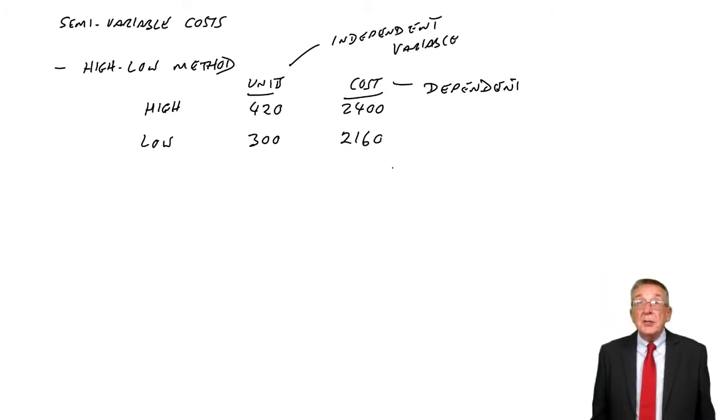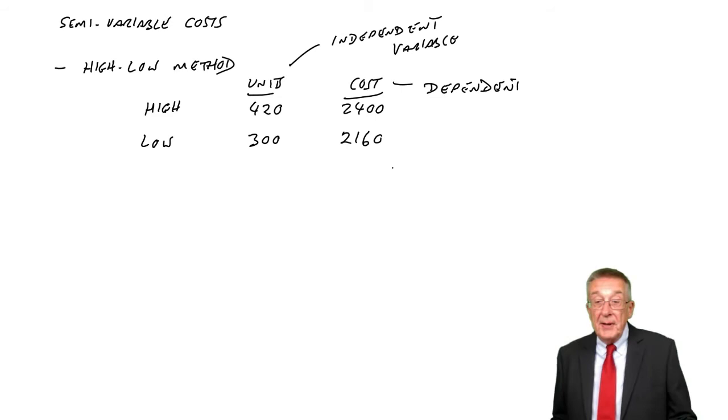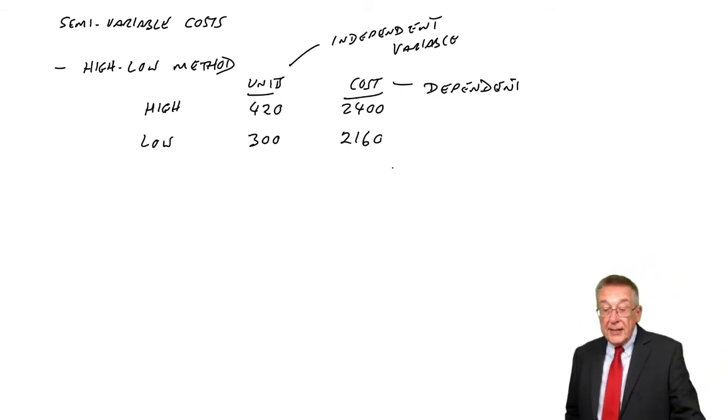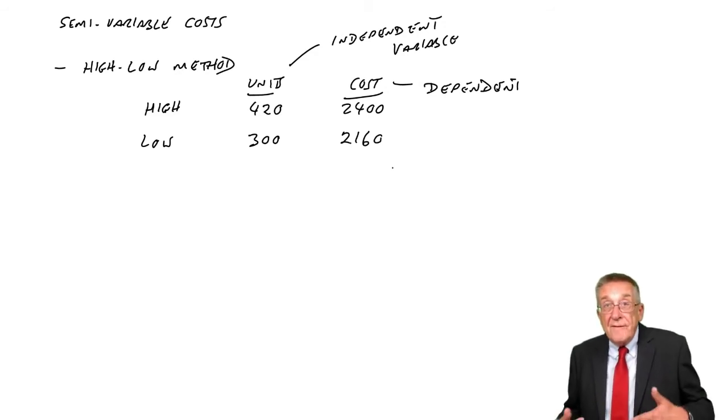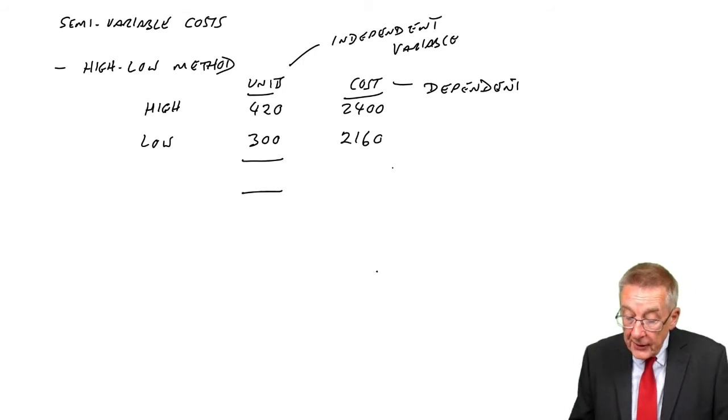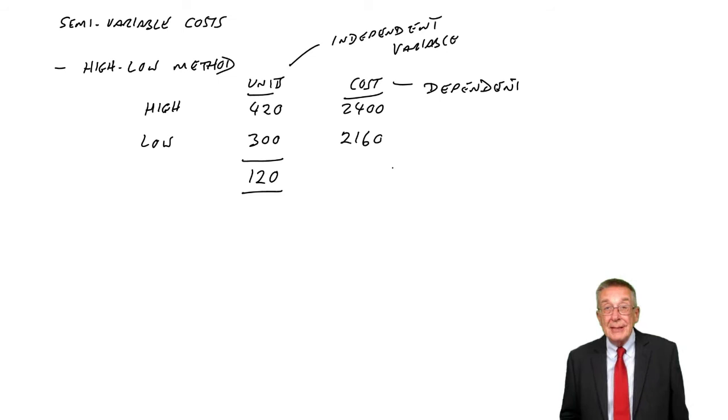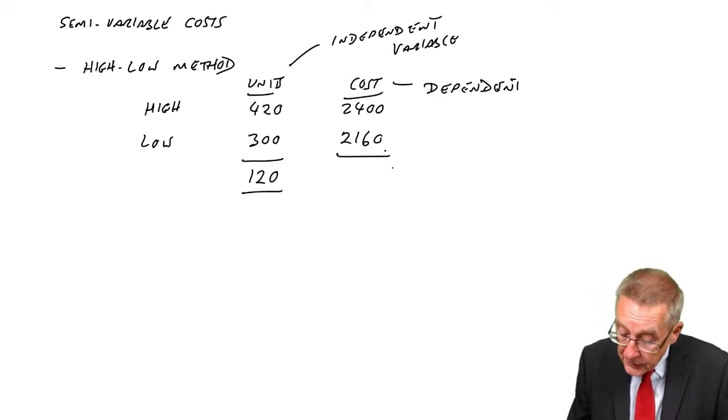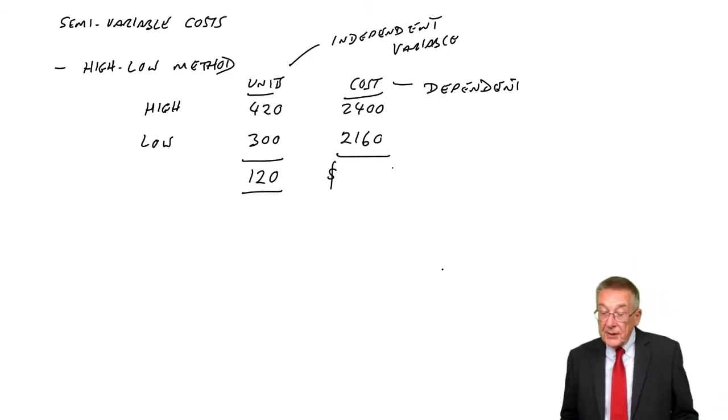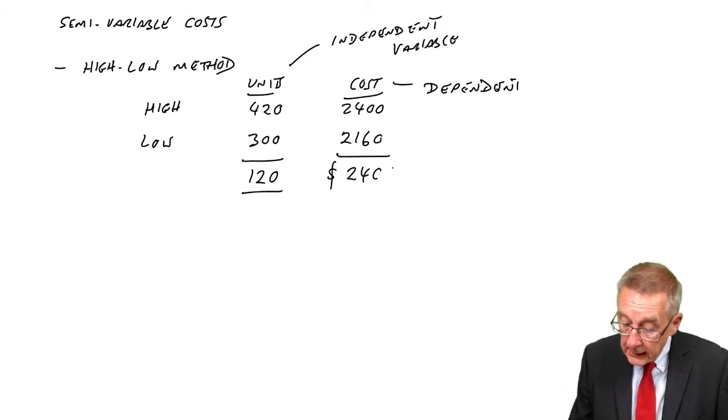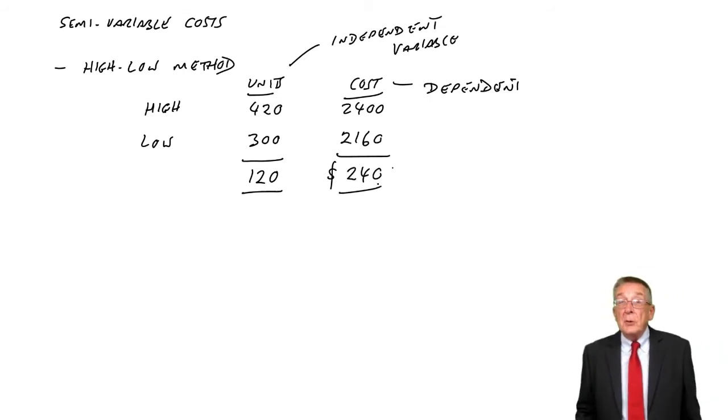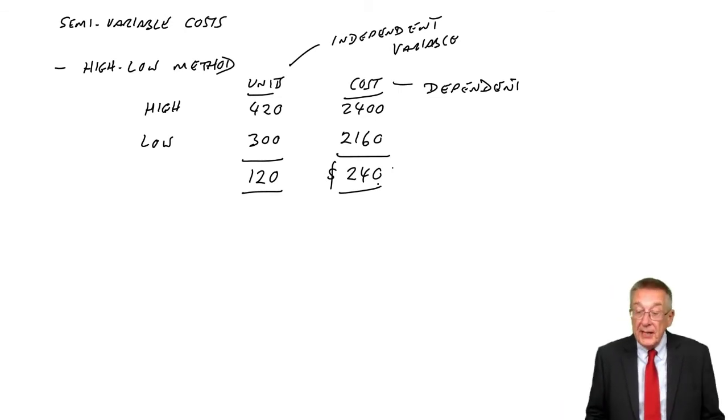We say, well, looking at those two, any fixed cost would be the same. So the only reason one's higher than the other, it's because of the extra variable cost of the extra units. So how many extra units are there? There were 120 extra units. And what was the extra cost? 2,400 minus 2,160 is 240. So 240 is the extra variable cost of the extra 120 units.